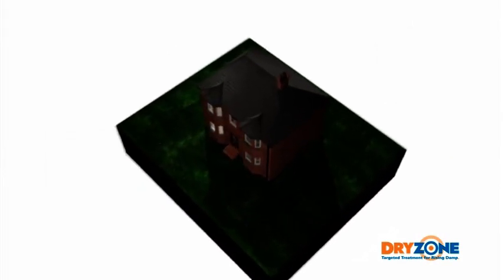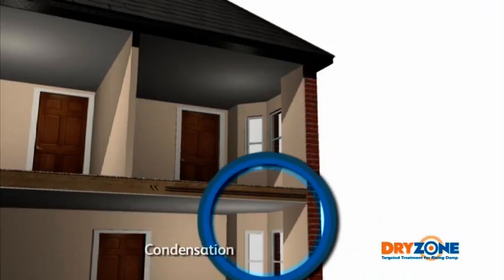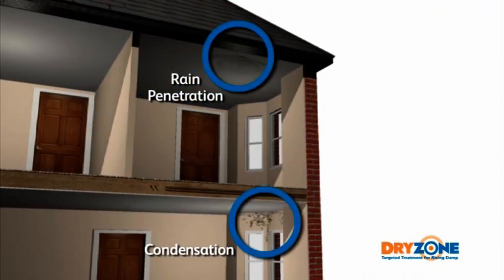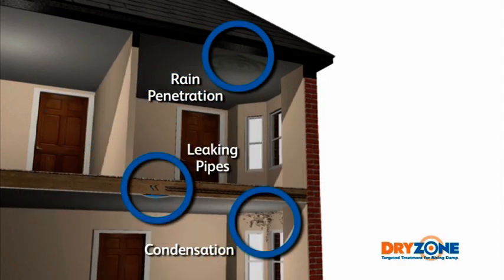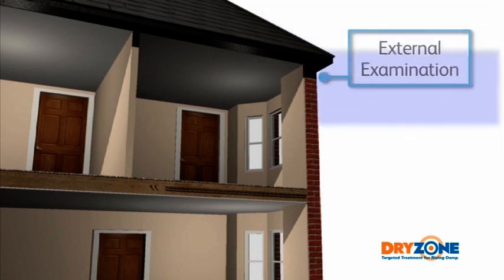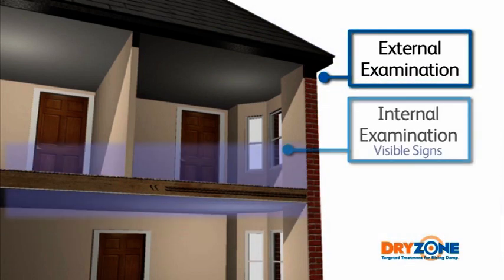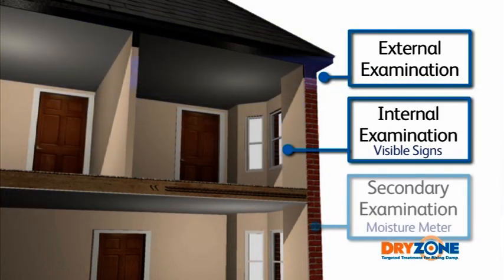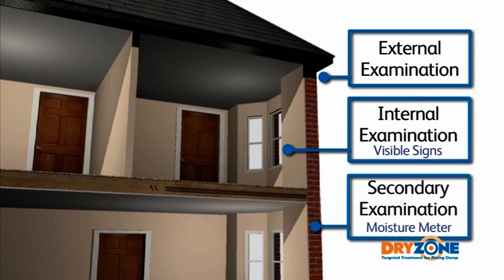Many houses suffer from dampness in one form or another. Condensation, rain penetration and leaking water pipes are very common and should not be confused with rising damp. A proper diagnosis to determine the source of dampness must be carried out before the correct remedial action can be taken.